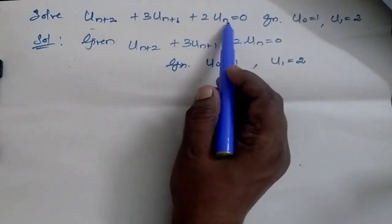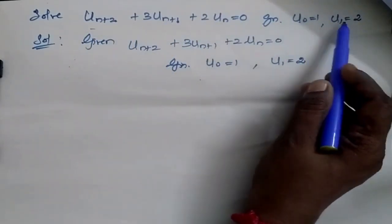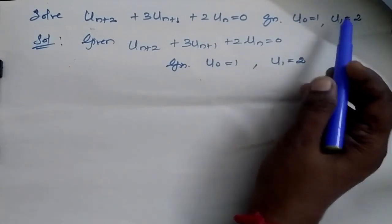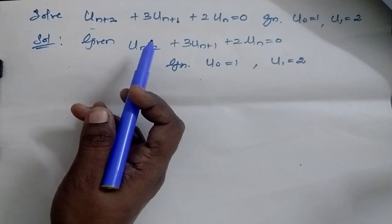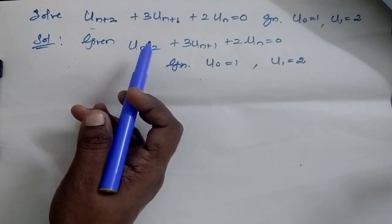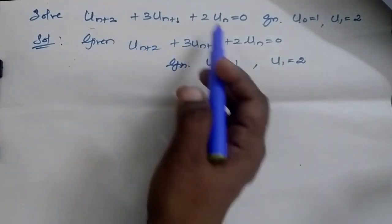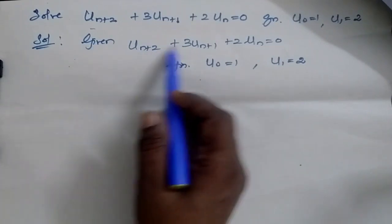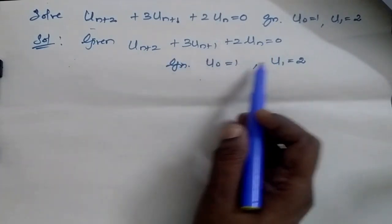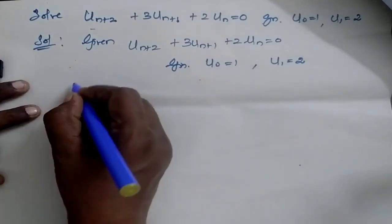Solve the given equation where u0 is equal to 1 and u1 is equal to 2. Now let us go for the solution. We are going to solve this equation using Z-transform and inverse Z-transform. The given equation is this, u0 is equal to 1 and u1 is equal to 2.